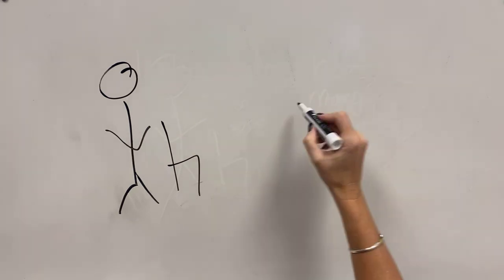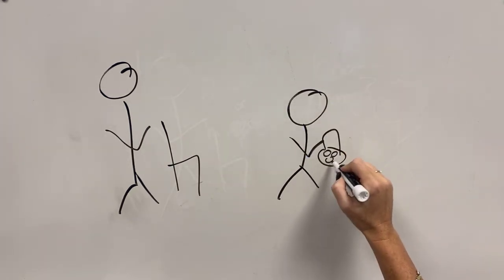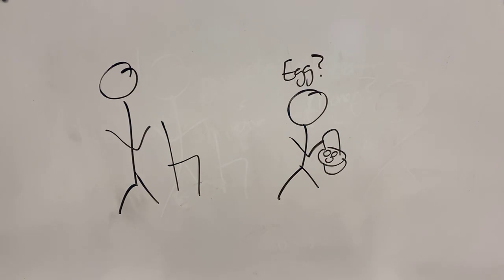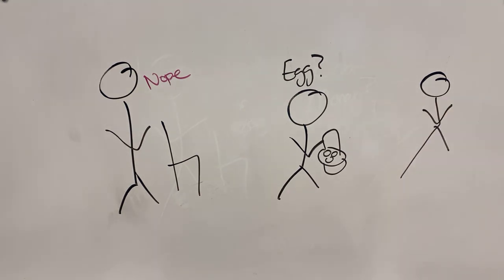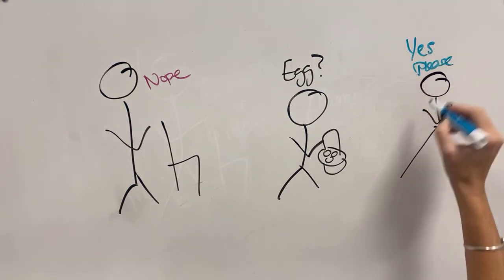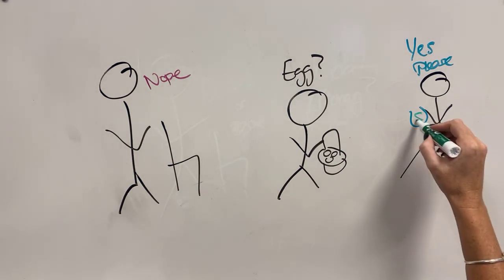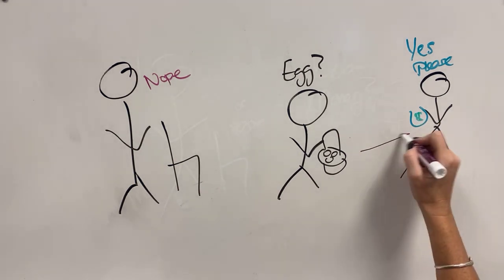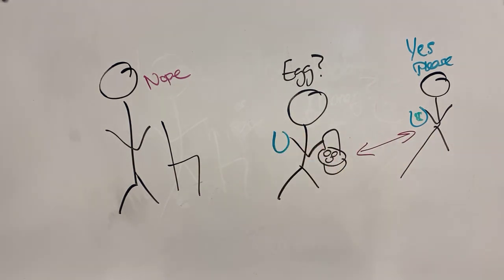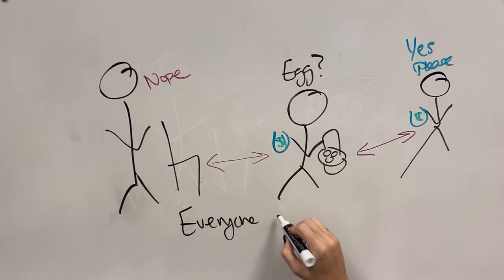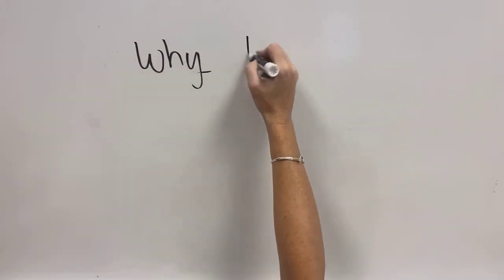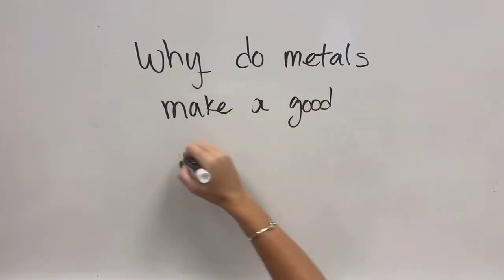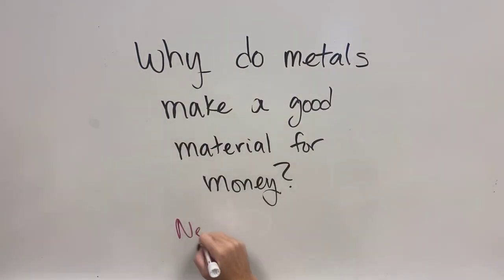So now if I wanted a chair and I had eggs, I'd say, hey, you want some eggs? And you'd say, nope, no interest in your eggs. But I can find anybody else who wants eggs, and as long as they have some money, they can give me money for the eggs. And then I can trade with them an amount that I think is fair for my time and energy. Then I can take that money from selling my eggs and give it to the person who made my chair, so everyone is able to make and get what they want when they need it. So then the question is, why were metals the earliest form of materials that were good for money?